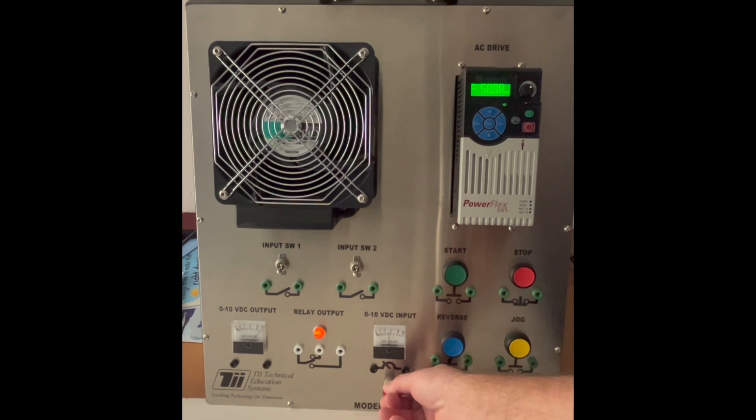So if I go to roughly 5 volts here I should be pretty close to about 30 hertz and I'd be running the motor at half speed. And so now an operator can come here and adjust this to control the speed of the variable frequency drive.